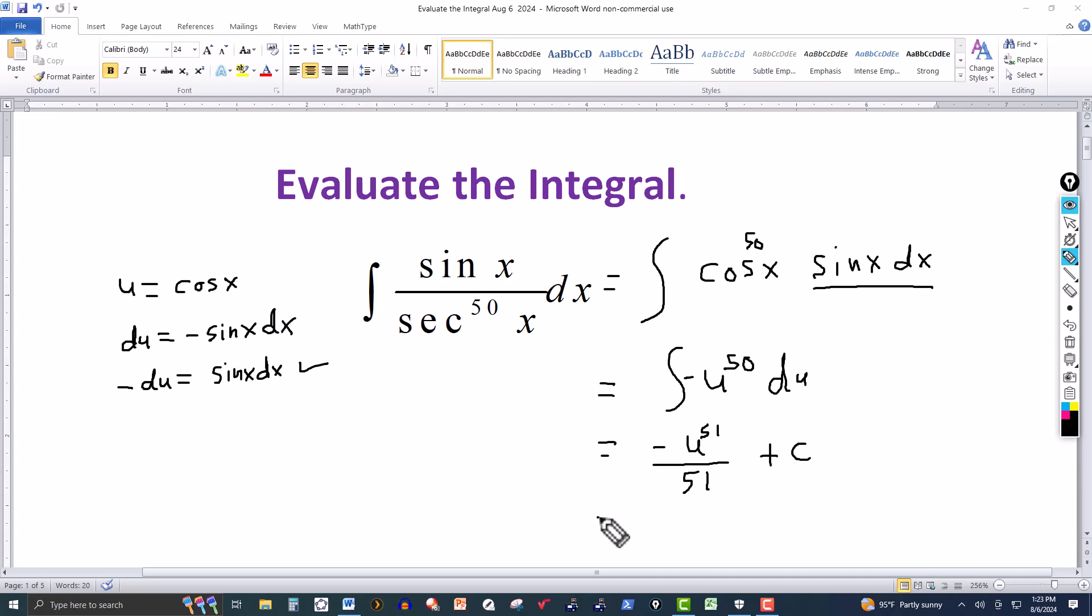And as always, we go back to the original variable, which is x. In this case, u equals cosine of x, so I'm going to write it this way: negative cosine to the 51st over 51 in the denominator, plus the constant of integration.